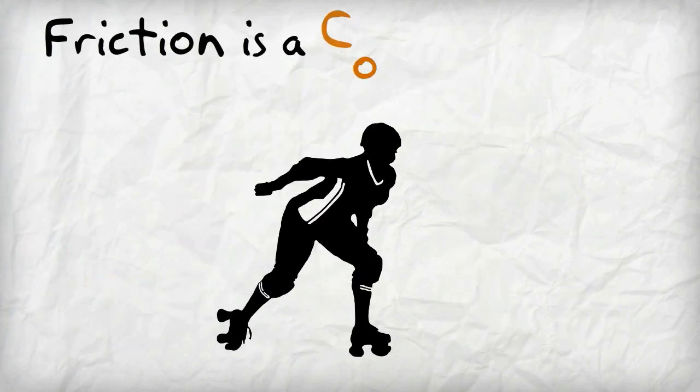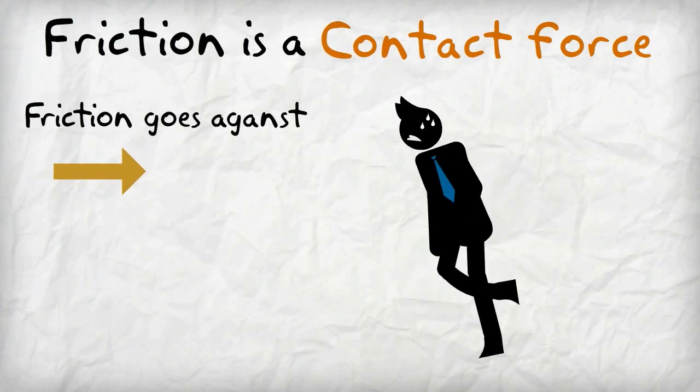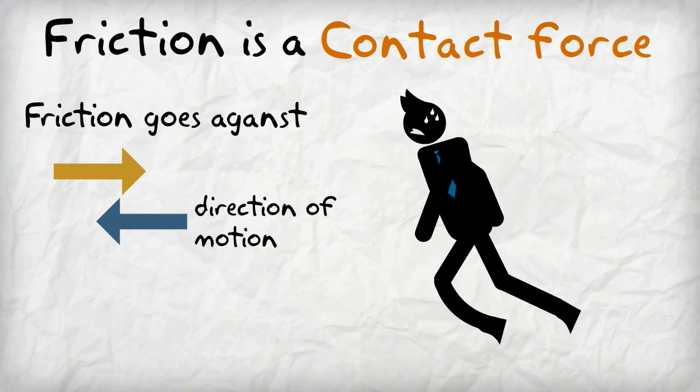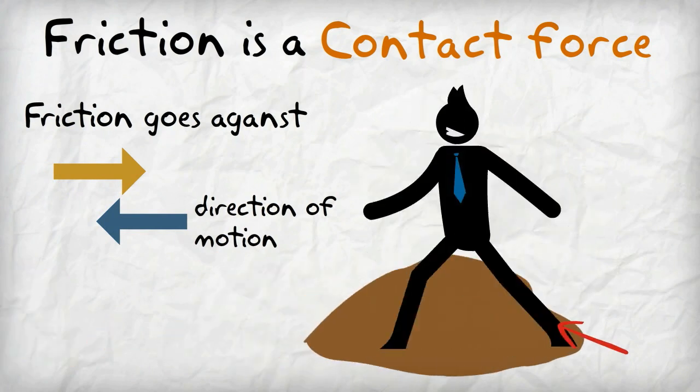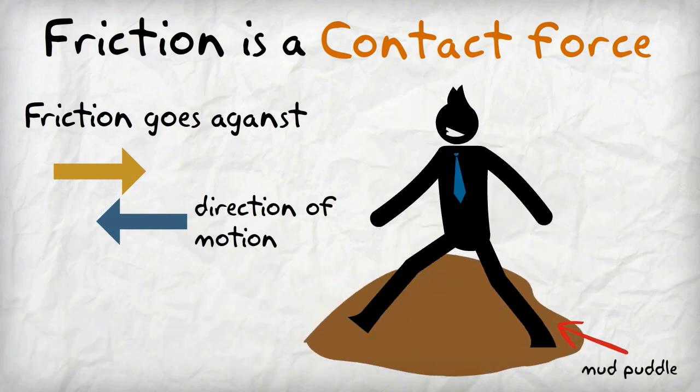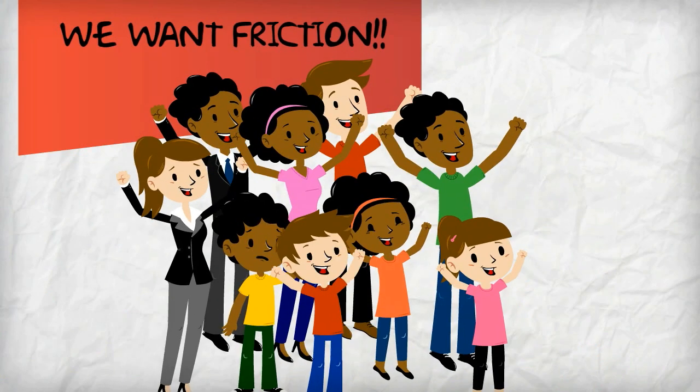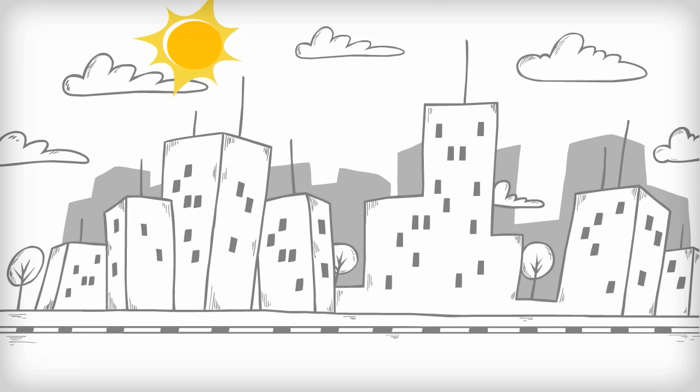Friction is also a form of contact force. Friction goes against motion. Even though friction slows things down and makes movement difficult, there are many things we could not do without friction. Friction holds us to the ground, allowing us to walk without slipping.